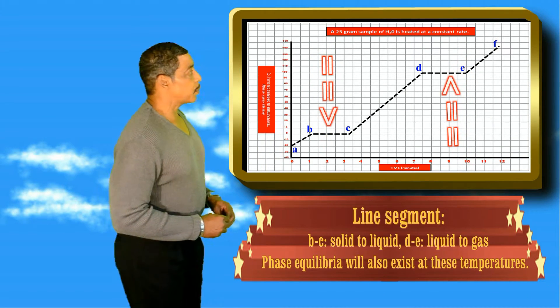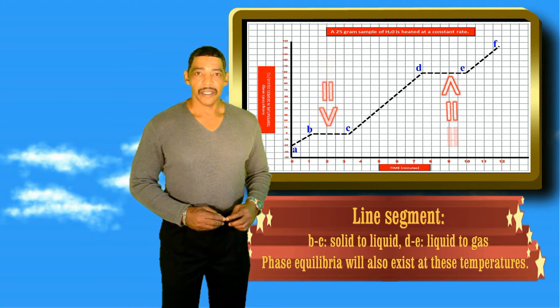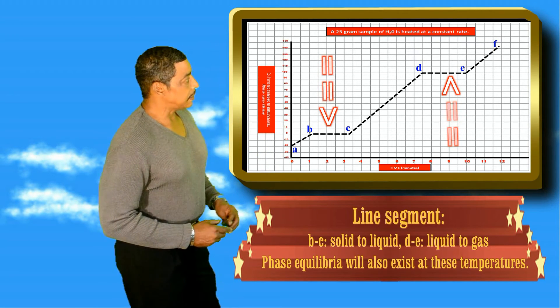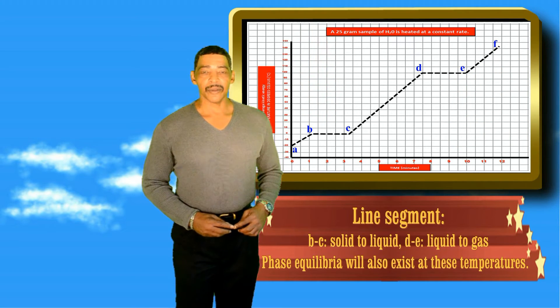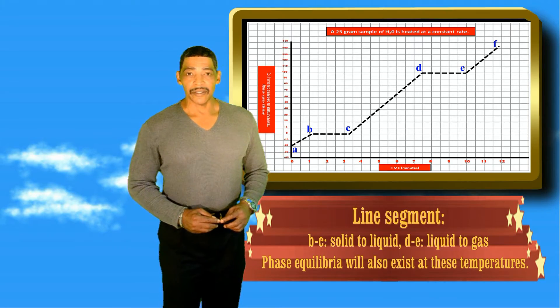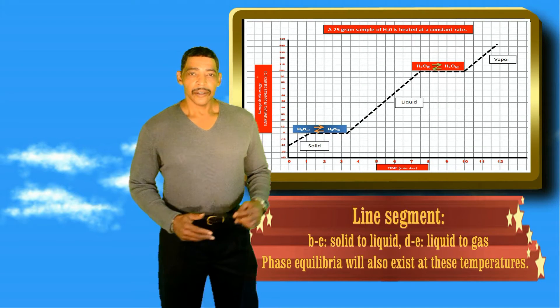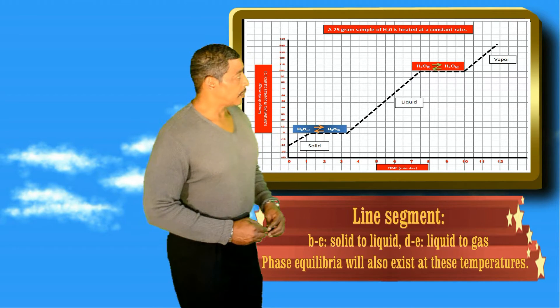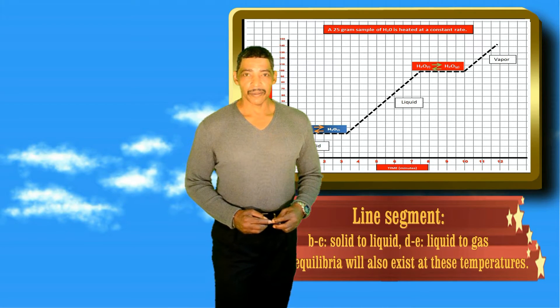The horizontal lines represent two different phase changes. Line segment BC represents fusion. Fusion means that the substance is melting. Line segment DE represents vaporization, where the substance is changing from a liquid to a gas or a vapor. During these regions, the average kinetic energy remains the same, and the potential energy increases. During line segment BC, a solid to liquid phase equilibrium will exist, and during line segment DE, a liquid to vapor phase equilibrium will also exist.